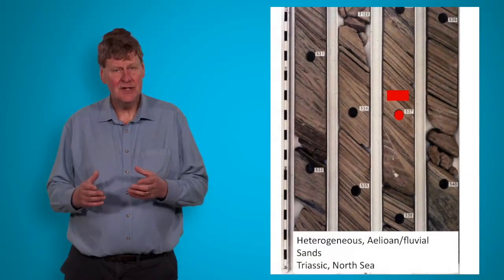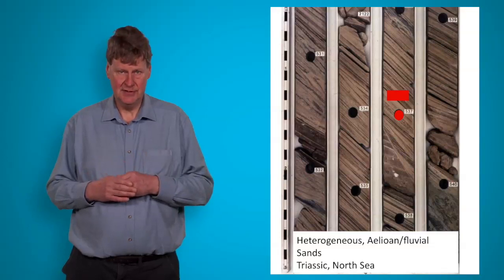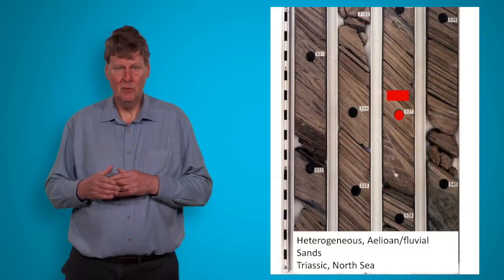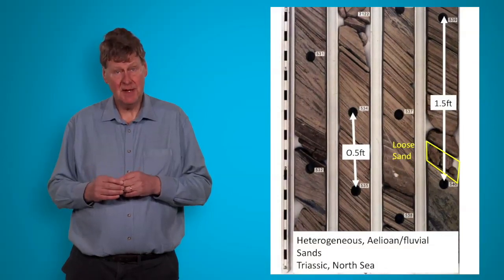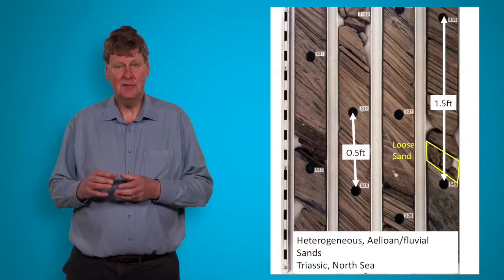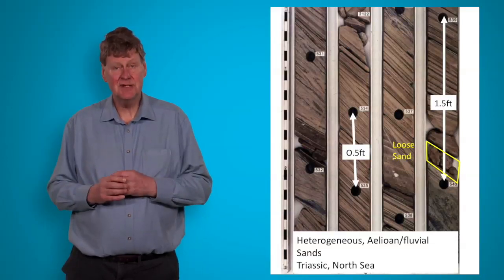Local lamination can be crossbedded, so there are two horizontal plug directions, X and Y. The horizontal plugs are not always at a regular spacing. In this case, the loose sand intervals could not be sampled and this introduces bias against the best reservoir zones.